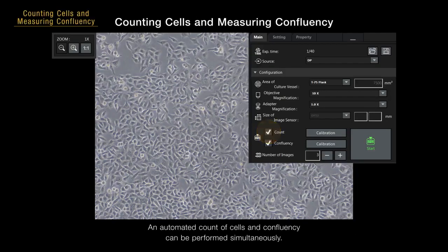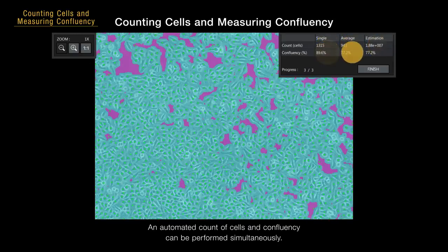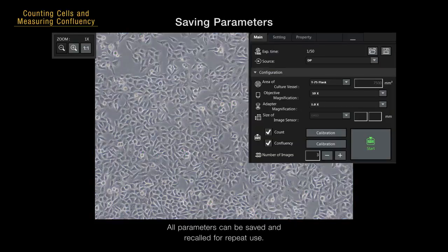An automated count of cells and confluency can be performed simultaneously. All parameters can be saved and recalled for repeat use.